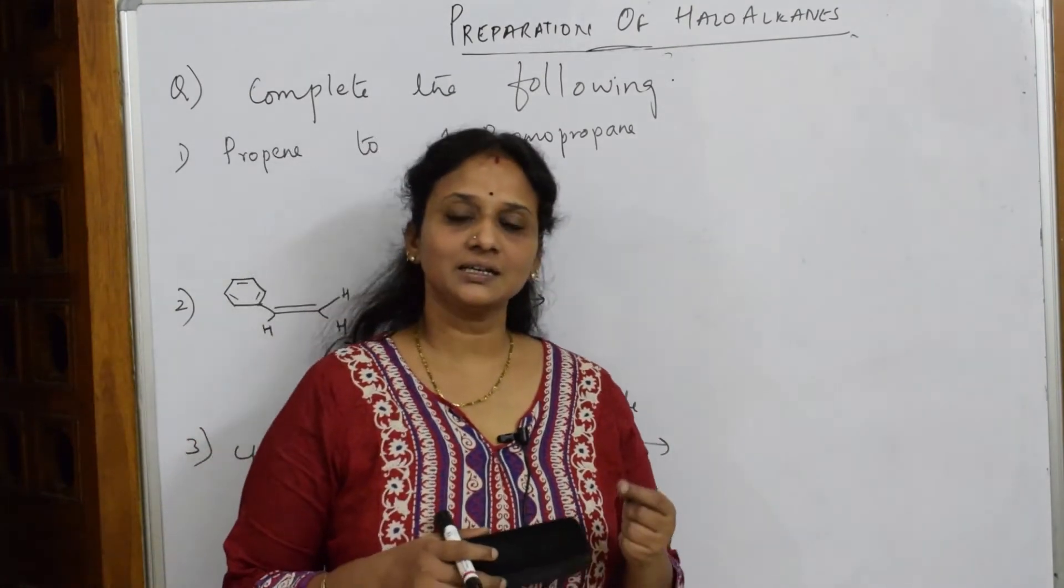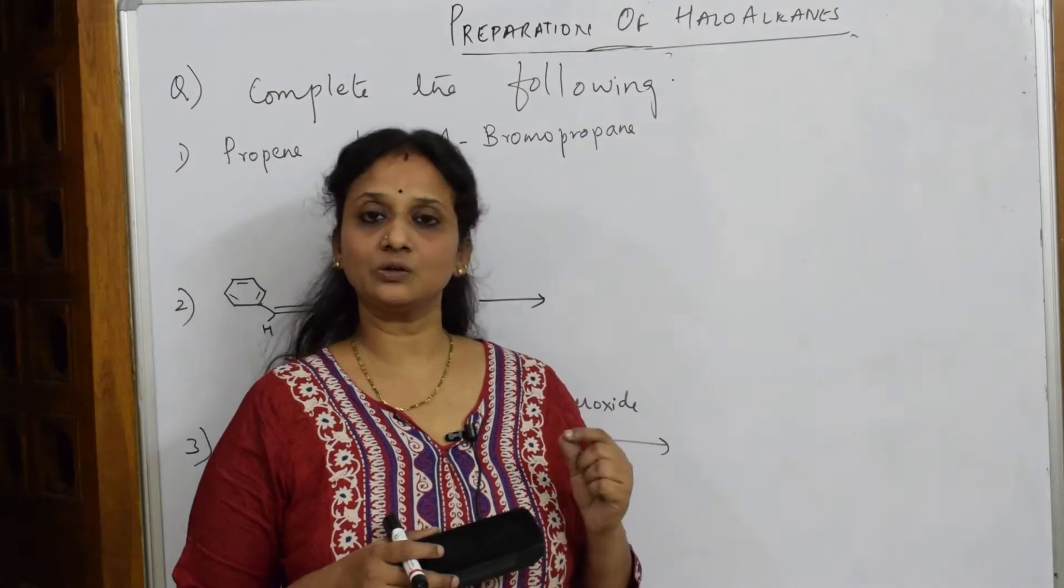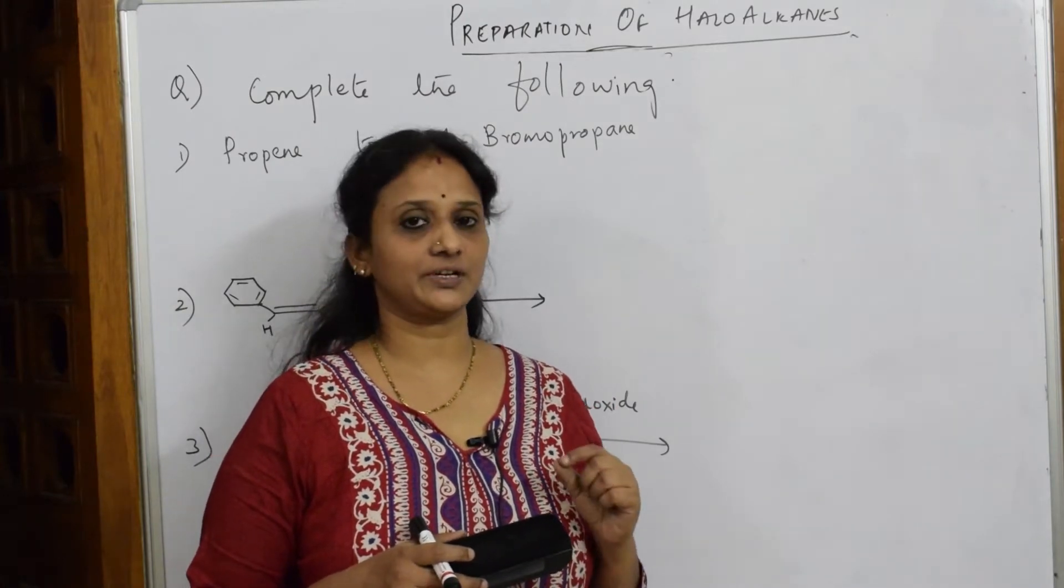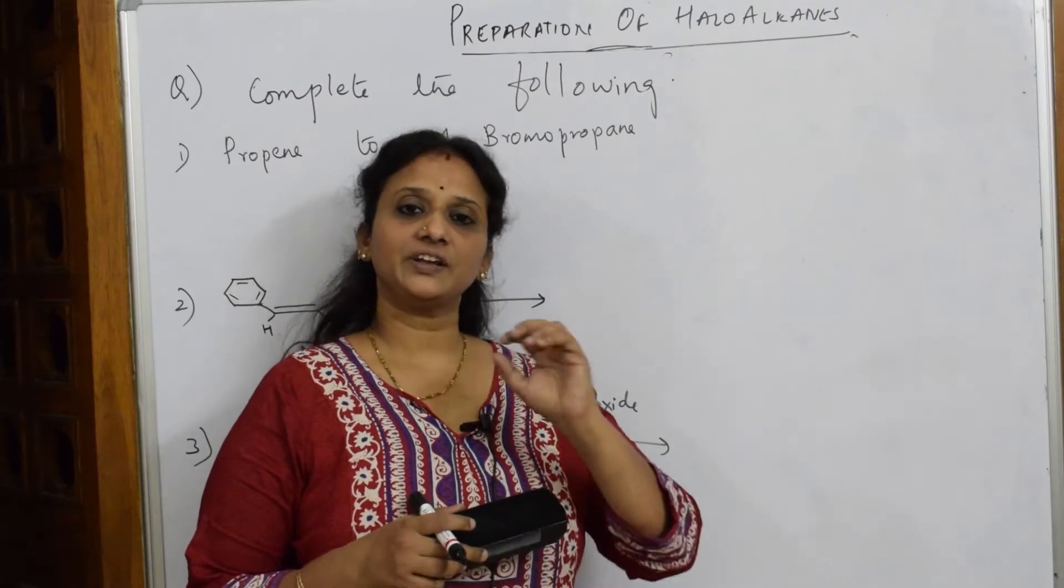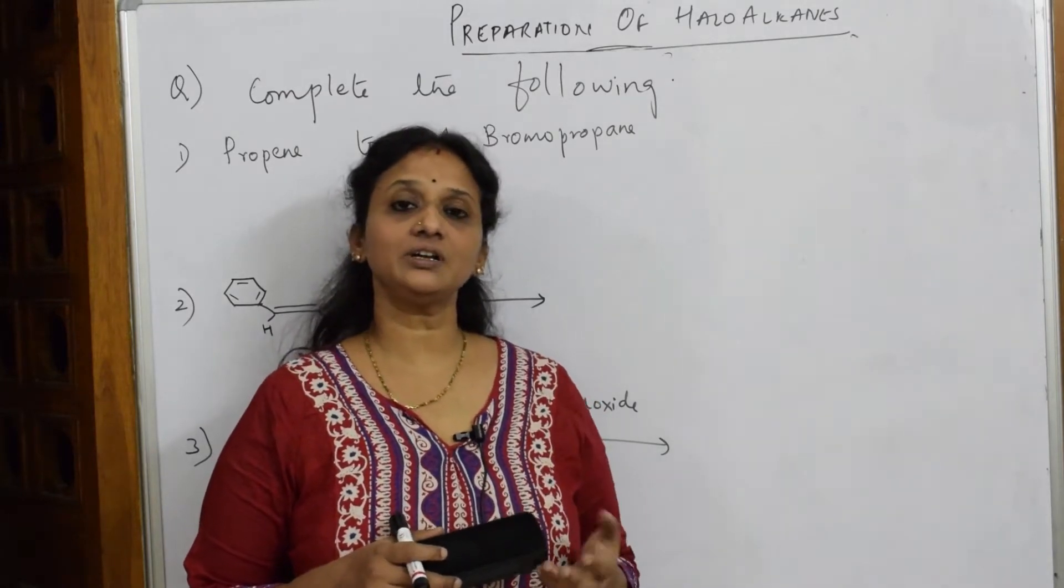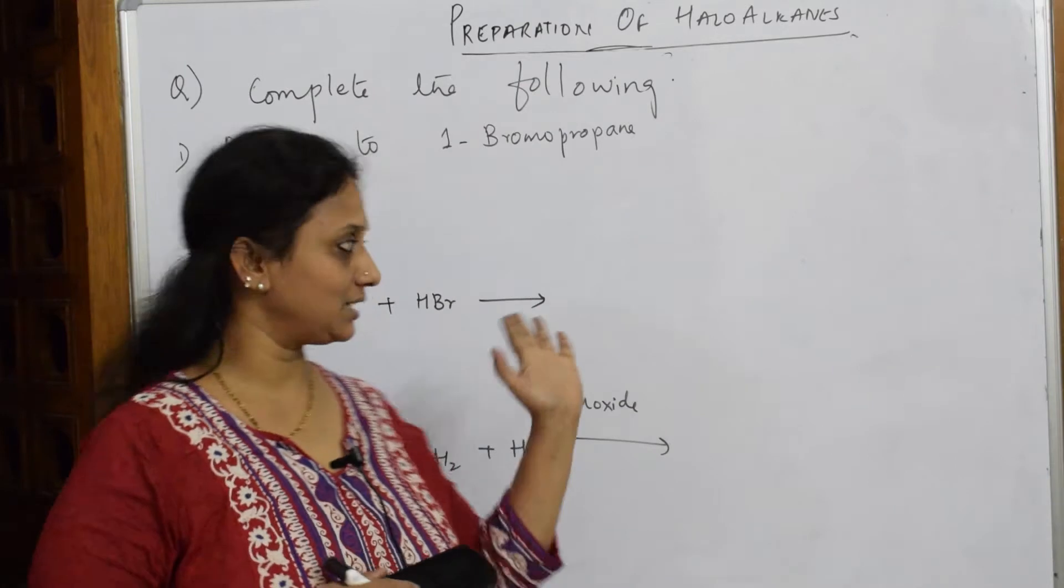So in that, the negative part adds to the carbon around the double bond which has less number of hydrogens. In anti-Markovnikov addition, the negative part adds to the carbon having more number of hydrogens. Remember that, let us solve these.